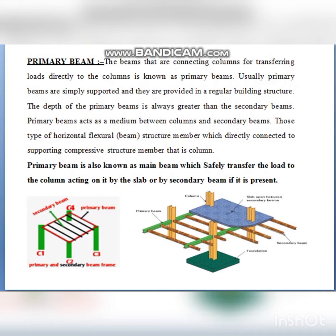This is regular building construction. The depth of the primary beam is always greater than the secondary beam. It is a horizontal flexural member directly supporting the column. The primary beam is also known as the main beam, and it safely transfers loads to the column.